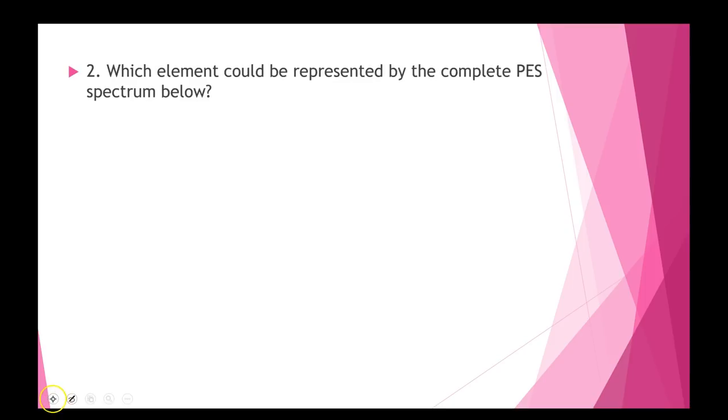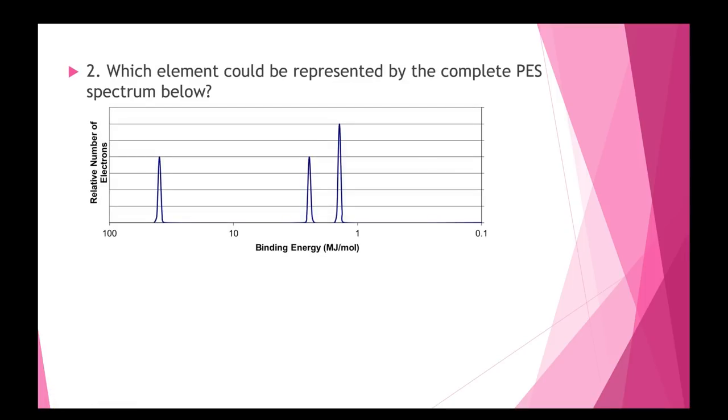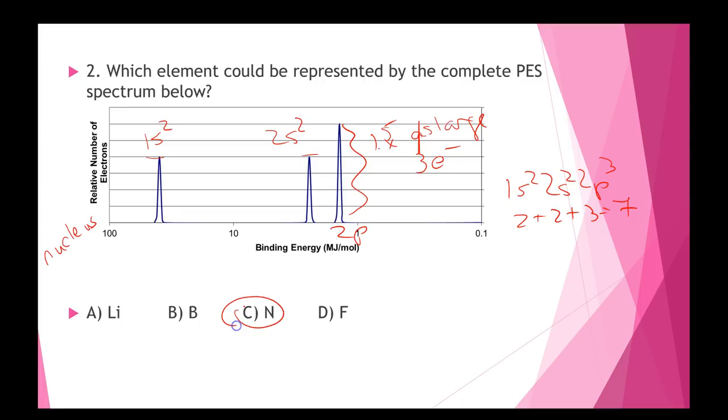Which element could be represented by the spectrum below? So this is where you have to identify it. Again, binding energy. Here's my nucleus. That tells me this is the 1s2. And then since this peak and that peak are the same height, that's the 2s2. But if I notice this one, it's only 1.5 times as large. Which means it only has 3 electrons in it. And that's my 2p orbital. So I have 1s2, 2s2, 2p3, 2 plus 2 plus 3 is 7. That means this guy is nitrogen.